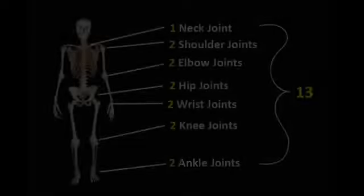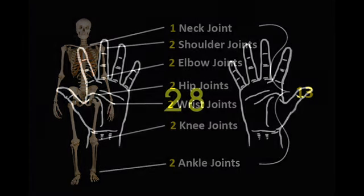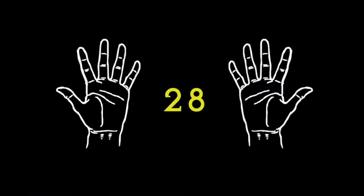The number 13 can be found on the human body as well, with the major joints allowing for movement summing to 13: two ankles, two knees, two hips, two shoulders, two elbows, two wrists, and one neck, totaling 13. These 13 joints together with your 28 phalanges construct a lunar calendar: 13 times 28 equals 364.